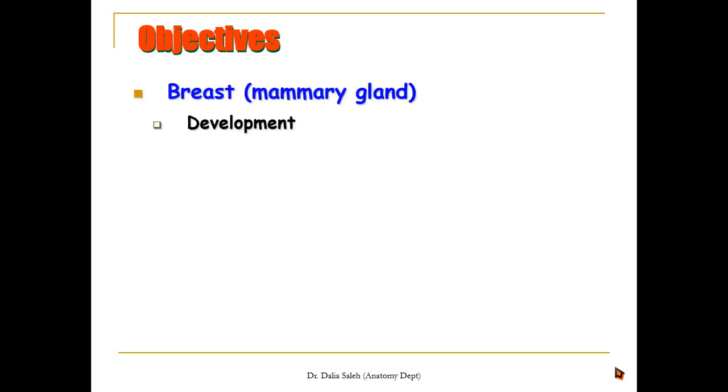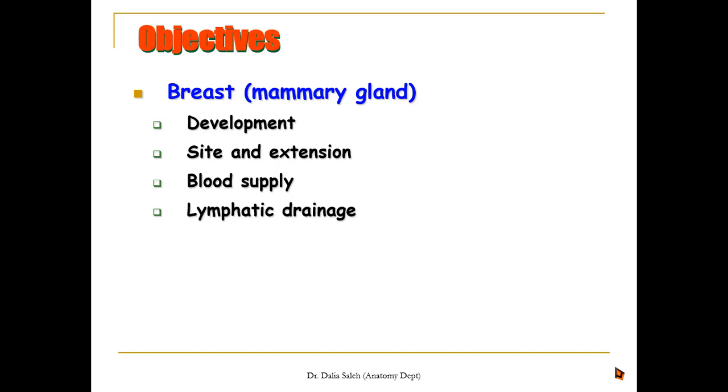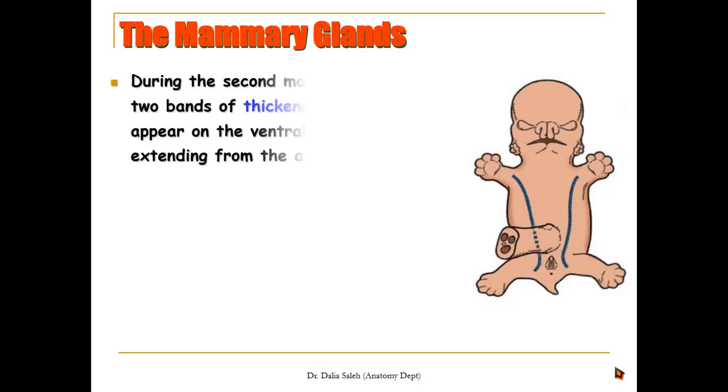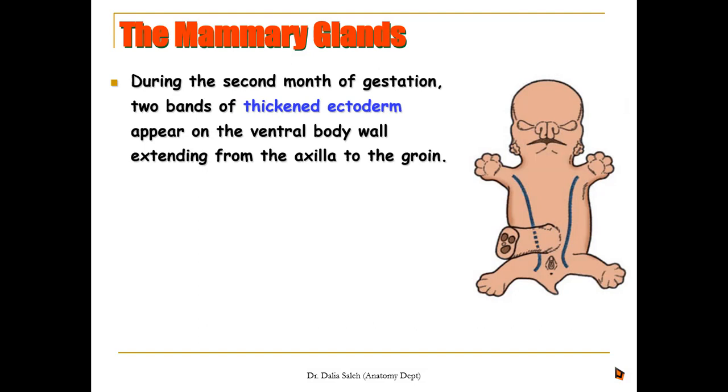Today I'm going to discuss the anatomy of the breast and the accessory lymph nodes. I'm Dr. Dalia Salih, professor and head of the anatomy department at Mansour University, Egypt. The objectives of the presentation will be: first, the breast regarding its development, site and extension, blood supply, and lymphatic drainage. Then the second half will cover the accessory lymph nodes, their groups, afferent connections, and efferent connections.